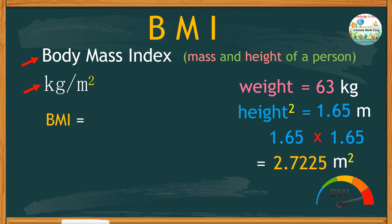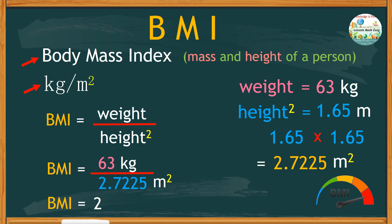To calculate BMI, we need the weights divided by the square of the heights. In this example, the weight is 63 kilograms divided by the square of the height, which is 2.7225 square meters. And this would give us a BMI that's rounded off to 23.14 kilograms per square meter.